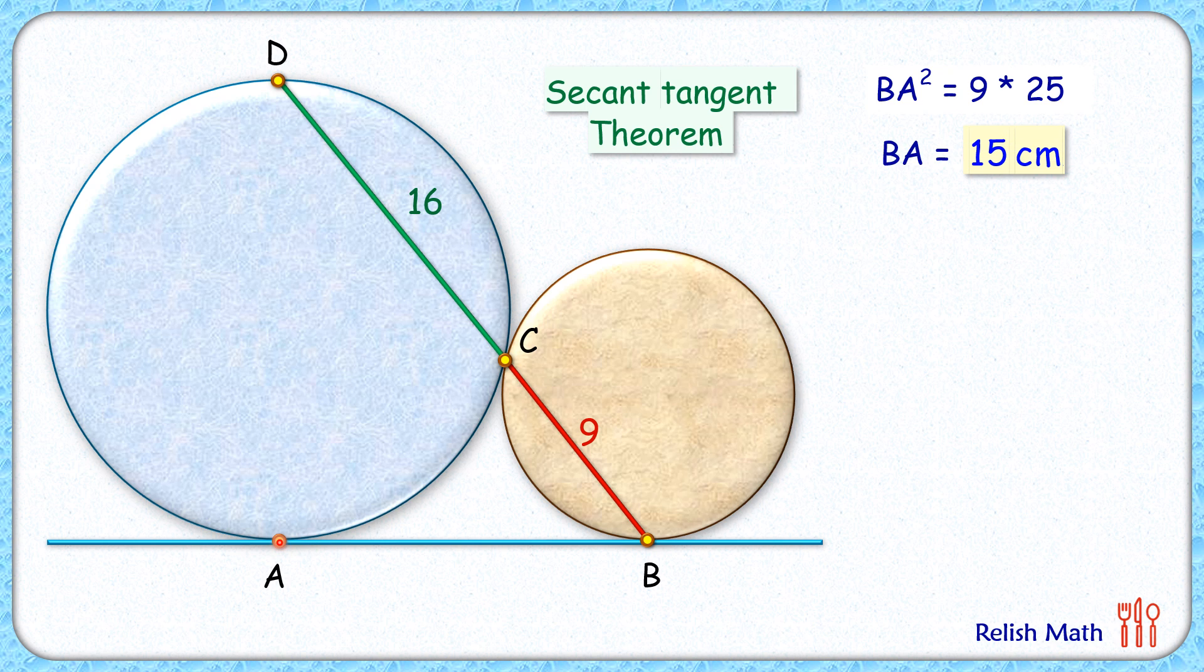So this length BA is 15 centimeters. Now let's join AC. We'll find the length of AC. For that, let's draw a common tangent passing through point C.